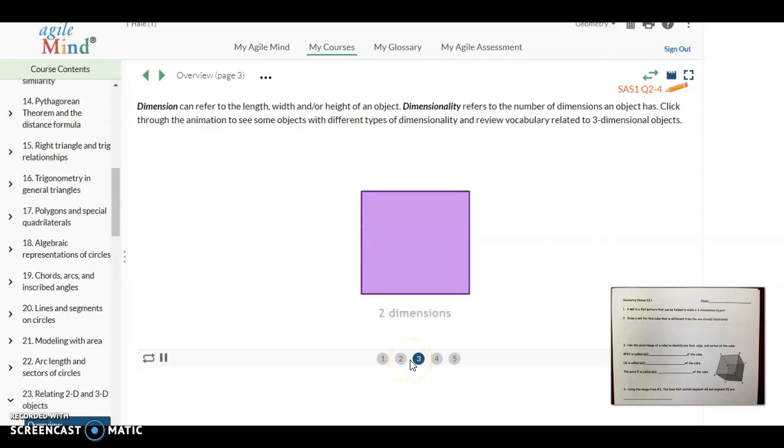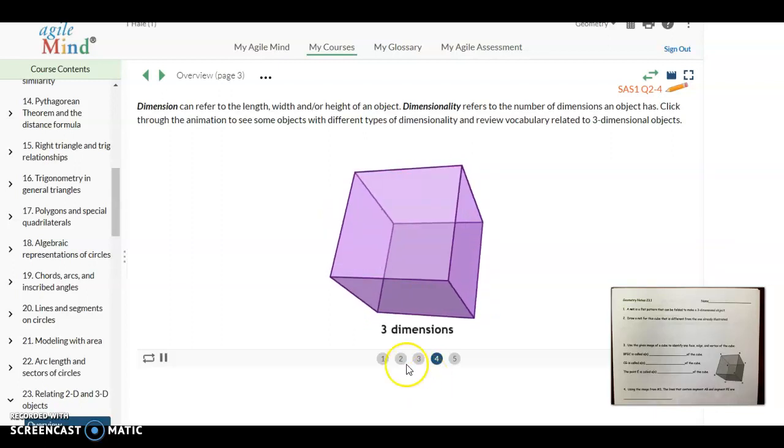Now we're going to extend it to where it has a width in addition to the length. So now it has two dimensions. This is a two dimensional object and this is what we consider the figures that we look at in geometry. They are two dimensional figures. Now we're going to add some depth or height to this figure and it now has three dimensions. It has length, it has width, it has height. It is a three dimensional object.